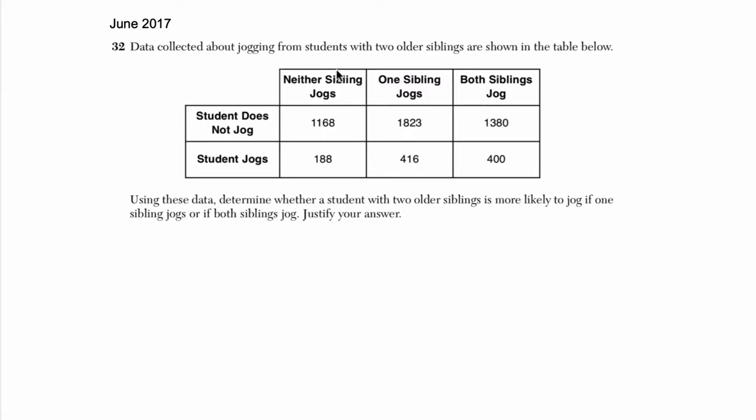Let's start by reading the problem. It says that data collected about jogging from students with two older siblings are shown in the table below. We have two scenarios: where students jog and where they don't jog, and whether their siblings—neither of them jog, if one of them jog, or two of them jog. What they would like to know is whether a student with two older siblings is more likely to jog if one sibling jogs or both siblings jog. Justify your answer.